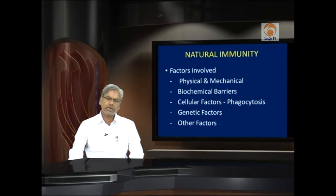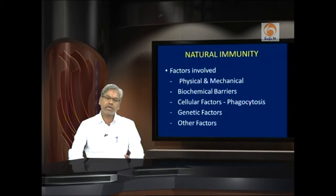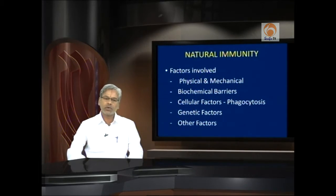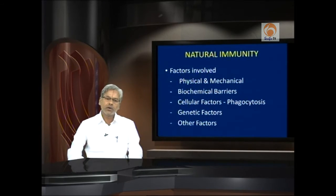Genetic factors are also considered in natural immunity, where variations are observed at the species level, race level, and individual level. We also have to consider two general phenomena: one is a rise in temperature. Our body temperature is congenial for our metabolic activities, but not for many pathogens. Whenever there is an infection, body temperature raises a bit — we call it pyrexia, or fever in general terms. Fever is almost a protective mechanism adopted by the body, so in general whenever there is fever, we need not immediately go for medication.